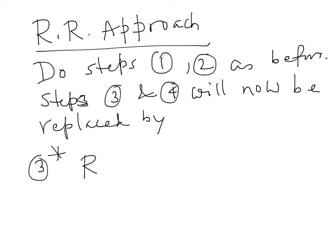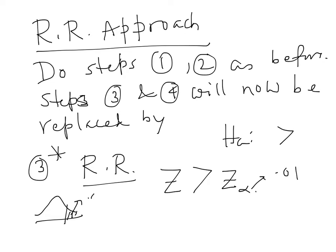In that case, you compute the rejection region. Recall your alternative hypothesis was with the greater than sign, so rejection region will be z greater than z alpha. Now alpha is 0.01 and you have to look up z 0.01. You remember the normal curve. If this is 0.01, this is 0.99. You look up the table backward, you will get this value to 2.33. So rejection region is z greater than 2.33.